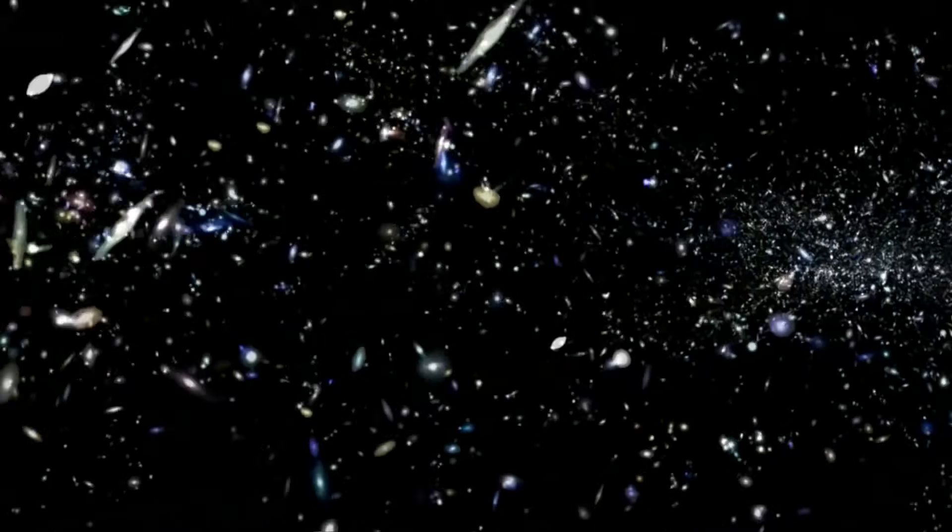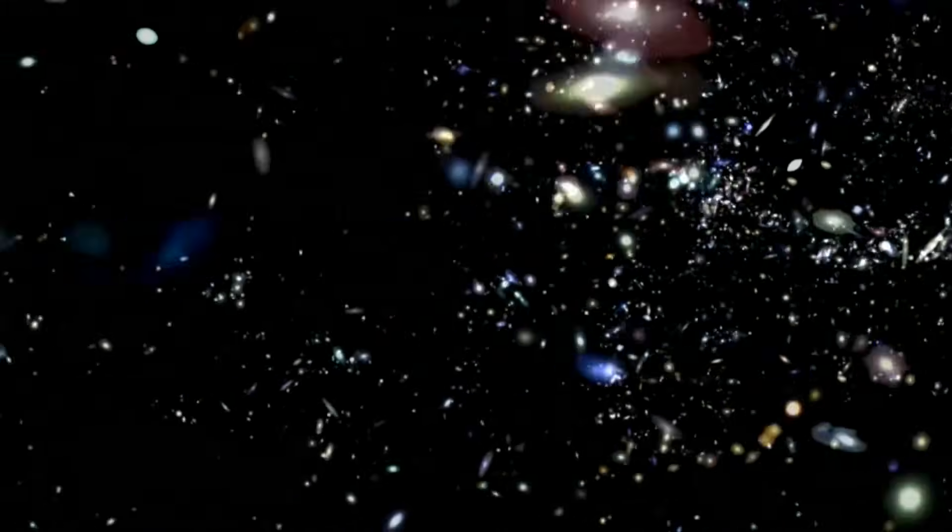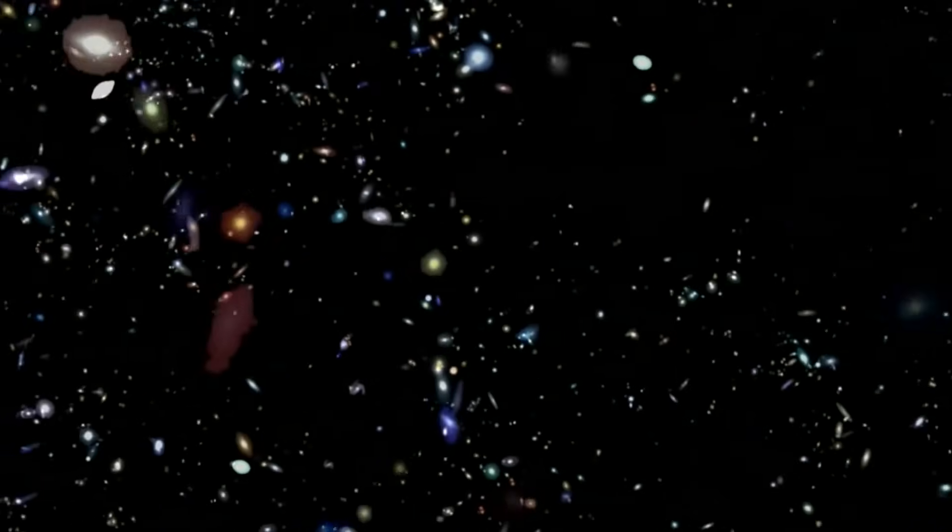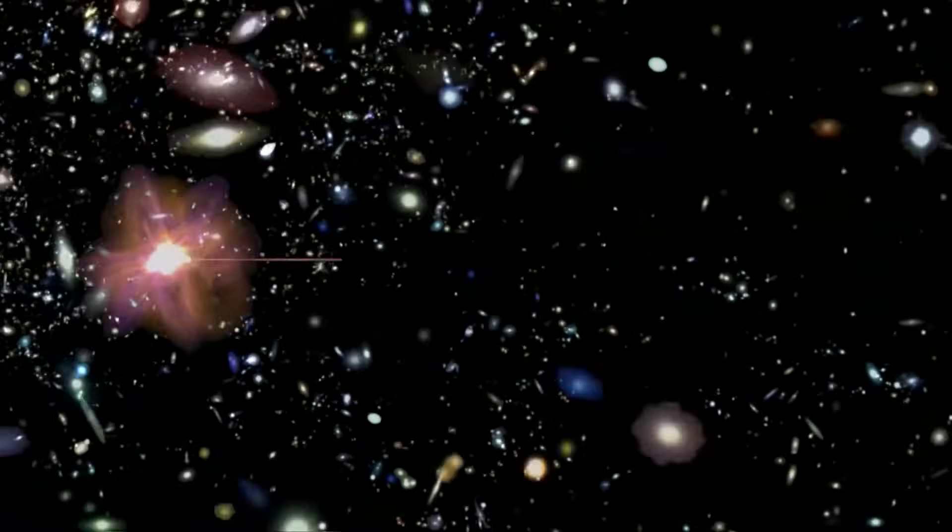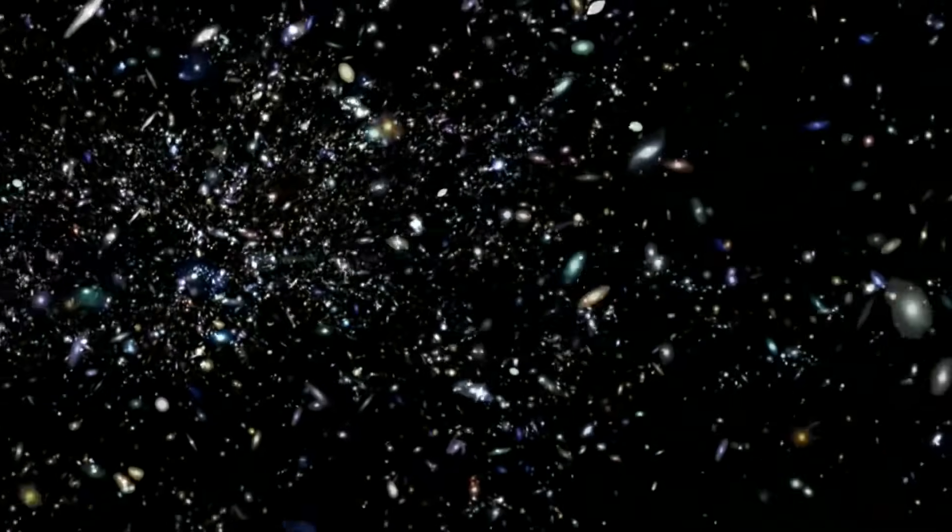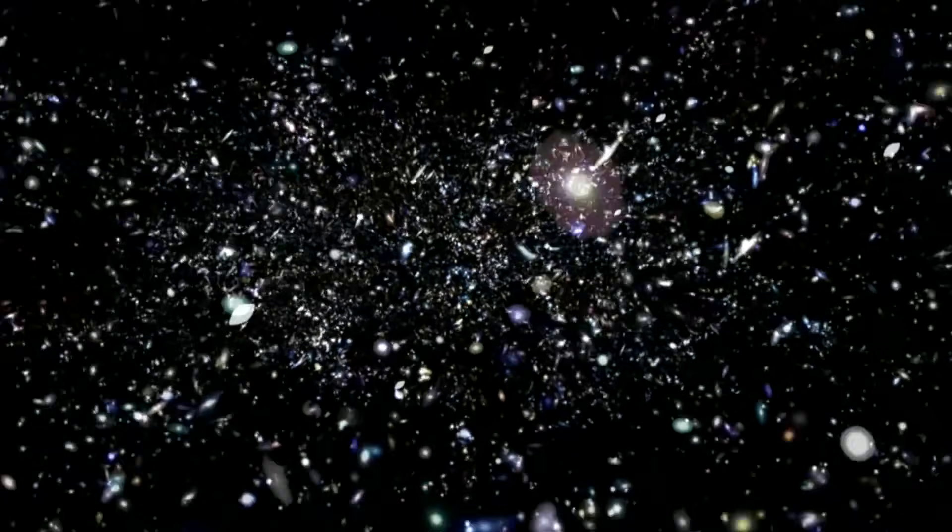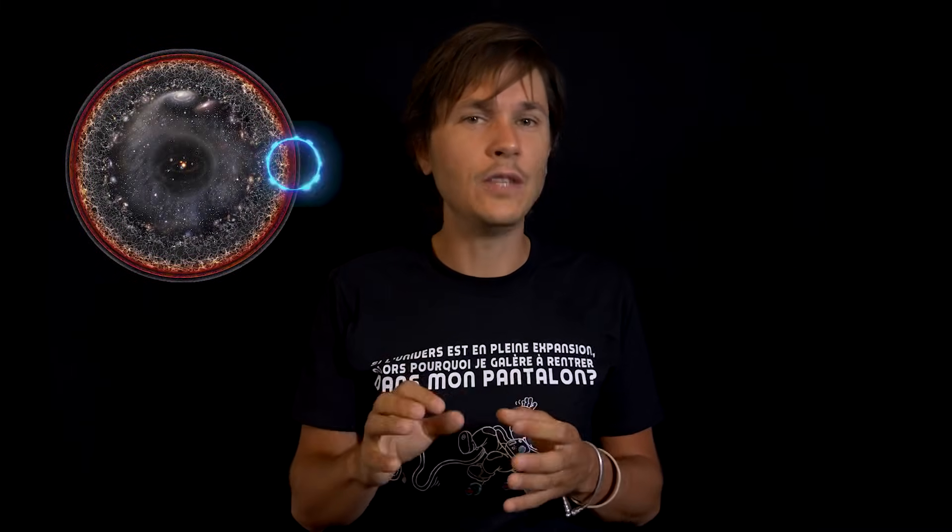And one might wonder how regions located in such distant confines of the cosmos can be visible if the light that left them 13.7 billion years ago has since the Big Bang only been able to travel 13.7 billion light-years in distance. The reason is that by having moved back at the time when the light that reaches us today left them, the objects, the galaxies that are here, were much closer to us than they are now.